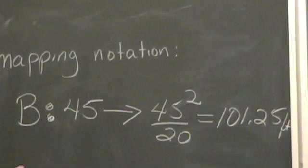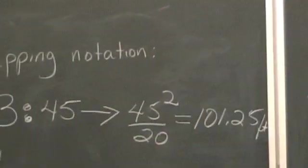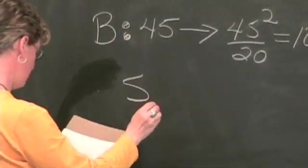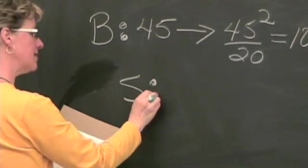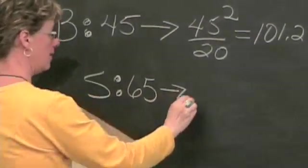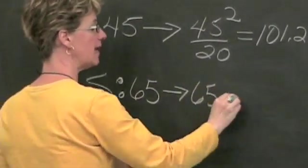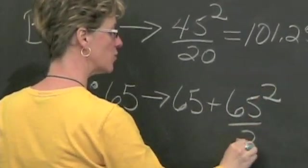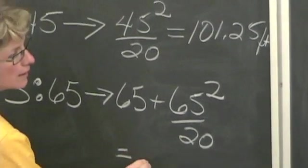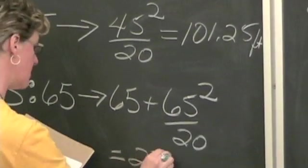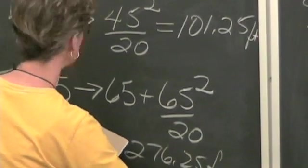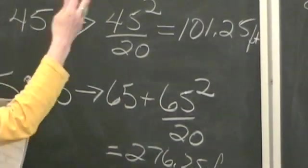For the 65, let's do stopping distance for the 65. Stopping distance, S maps 65 onto 65 plus 65 squared over 20. And we found that that was equal to 276.25 feet. So you have your mapping notation and your function notation.